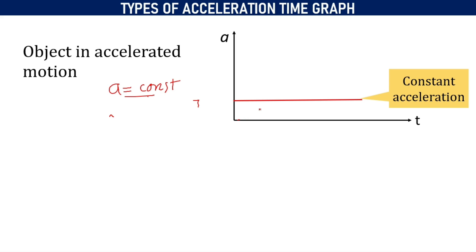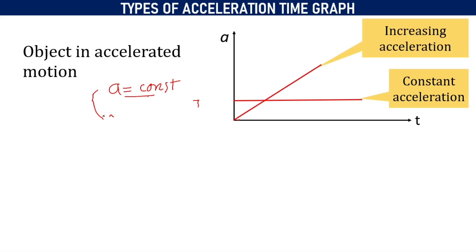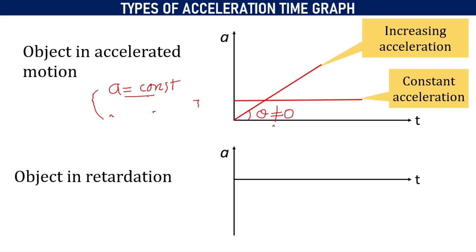Next, we are going to consider the case where acceleration is increasing linearly. When the value of acceleration increases with time, we will get a straight line which makes a certain angle theta — not equal to zero — with respect to the time axis. So it is an inclined straight line at angle theta. In this case, acceleration is uniformly increasing.